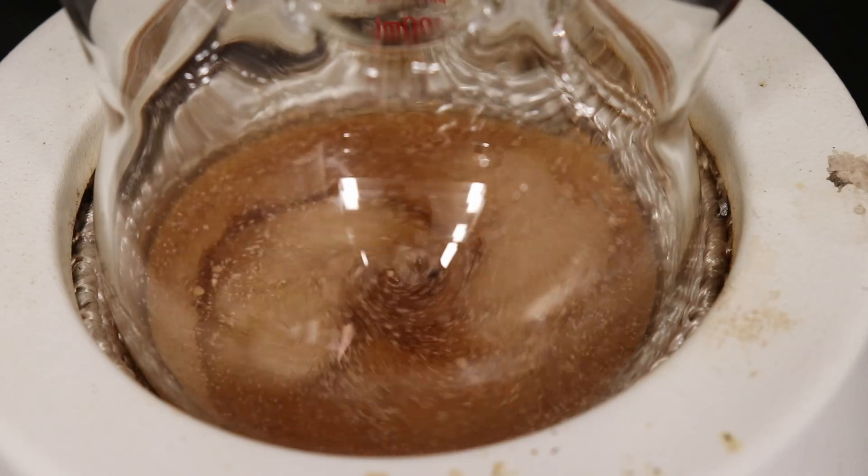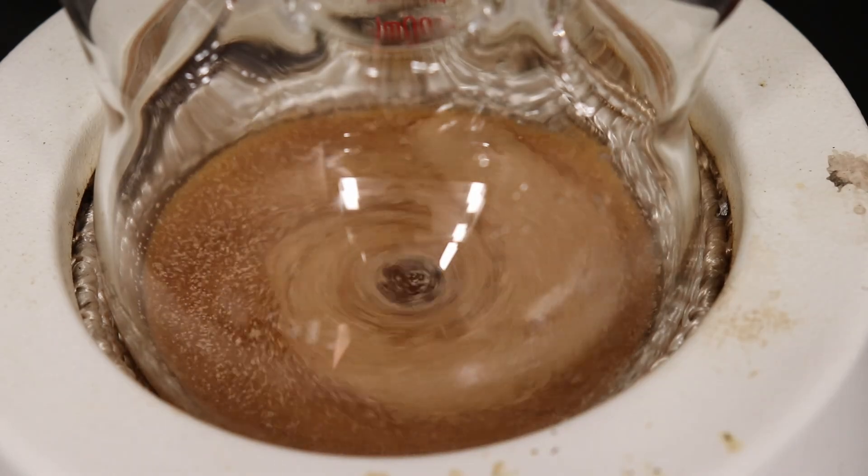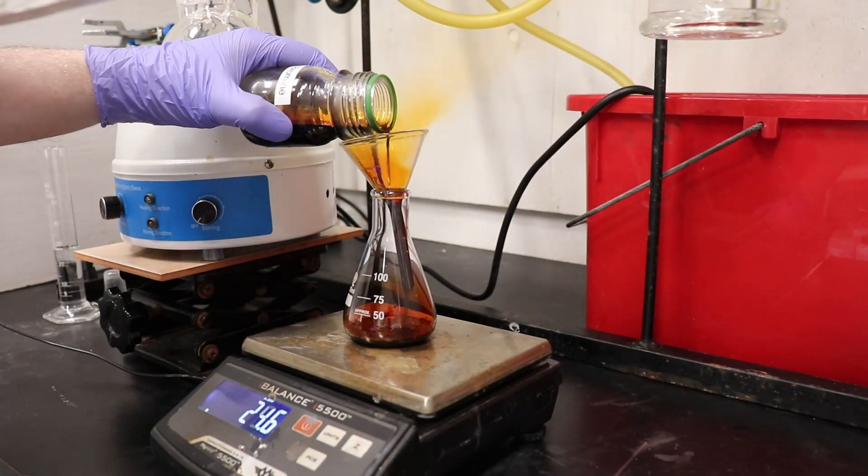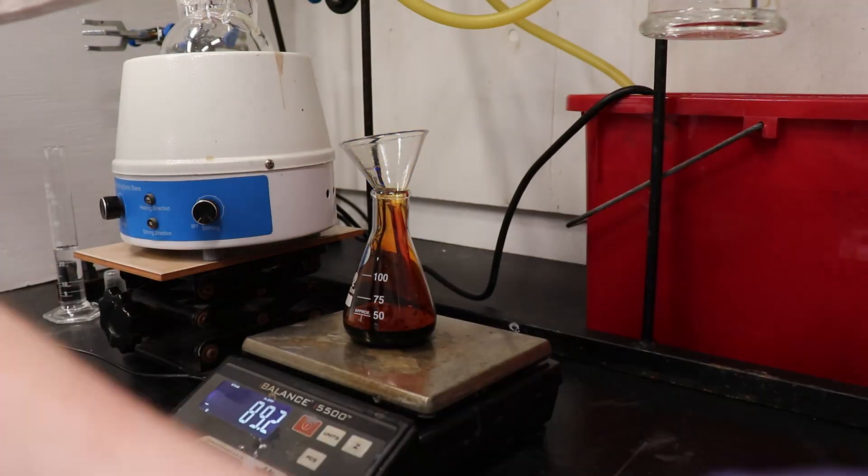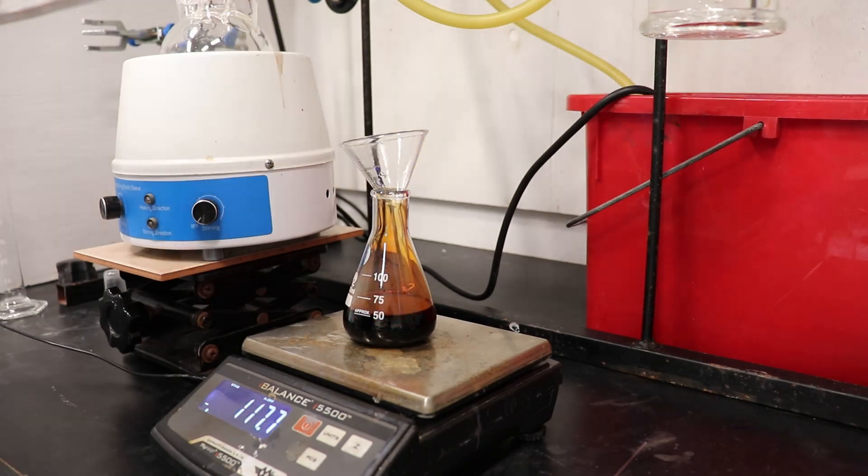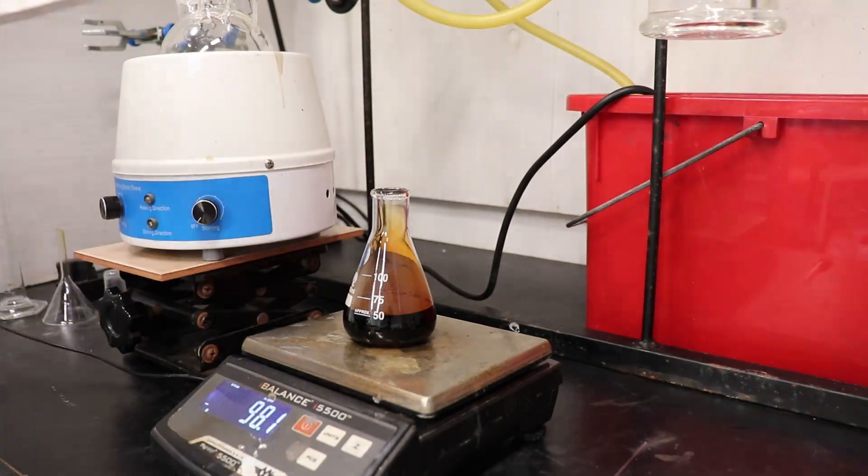While the 2-naphthol was dissolving, I prepared a solution of 89 g of bromine and 28 mL of glacial acetic acid. Keep in mind that any handling of bromine must be done in a very well-ventilated space.